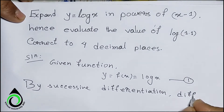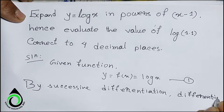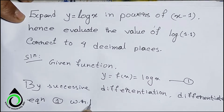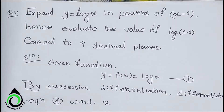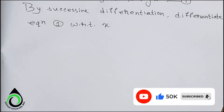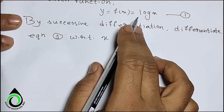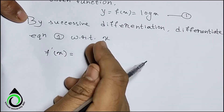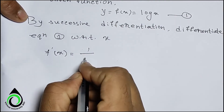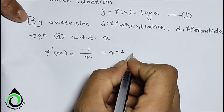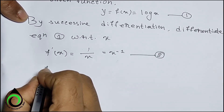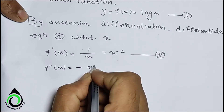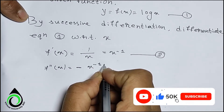Differentiating equation 1 with respect to x, we get f'(x) = 1/x, which equals x⁻¹. This is equation number 2. Differentiating again, f''(x) = −x⁻².